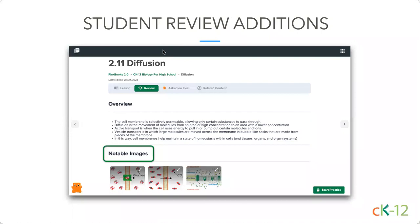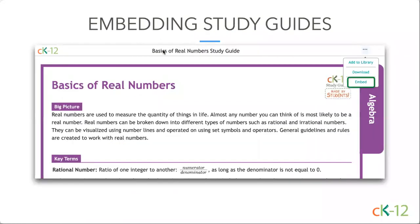I want to mention what the student sees on a CK-12 book. We've pulled in the overview and vocab, some extra practice questions, and in the last year we've added notable images — those might be great reference charts or resources. For studying accessibility, our study guides are available for a range of math and science topics. For the ones that are available, we open up an embed code so if you're using a platform and want to embed that resource, you can. You can also always copy the URL of any resource — whether it's a practice set, lesson, simulation, interactive, or study guide — and share that with others.